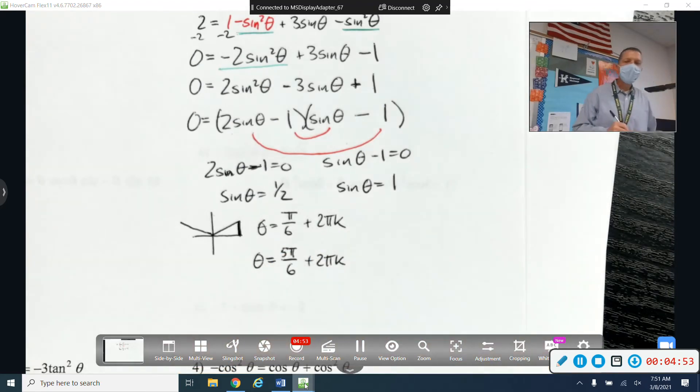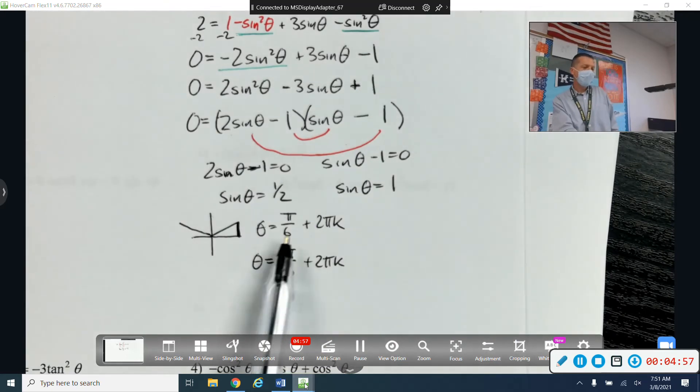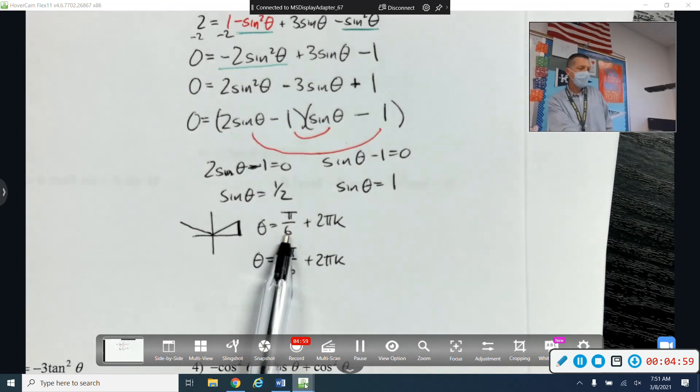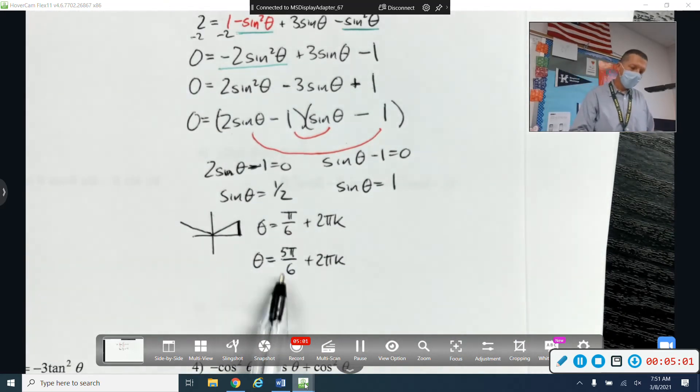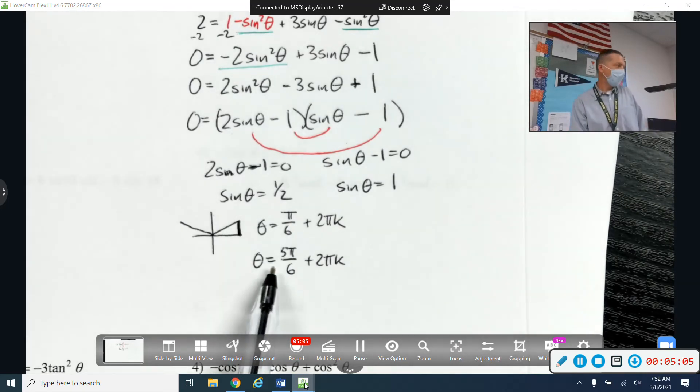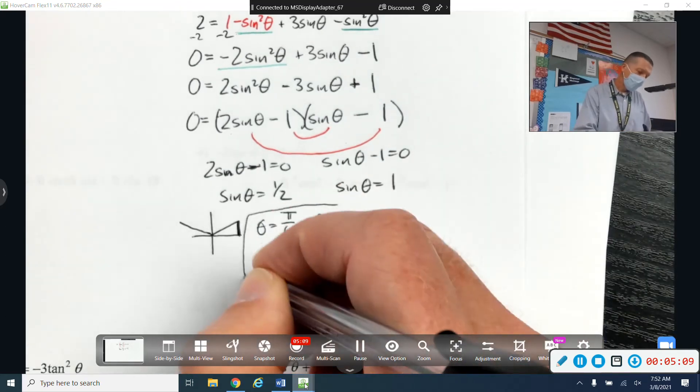Five pi over six plus 2 pi k. And the pi minus rule works, right? If you get one answer, pi over six, pi minus pi over six gives you five pi over six. So I'm not supposed to need the pi minus rule because this is a unit circle problem. But if I get stuck, it still works.